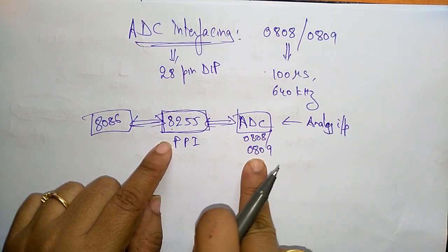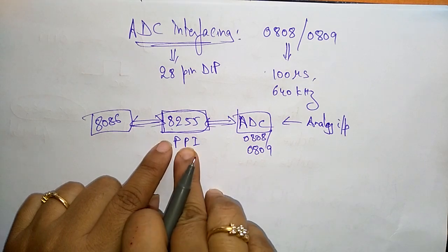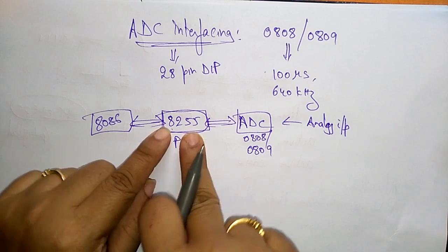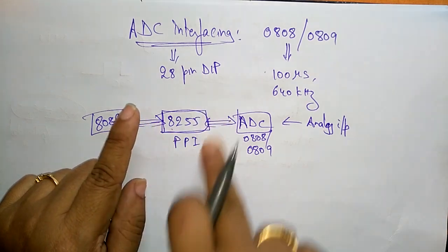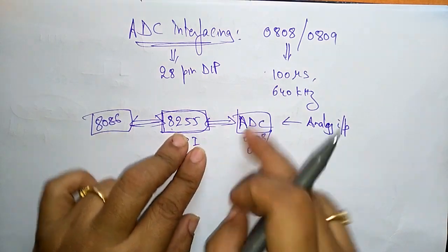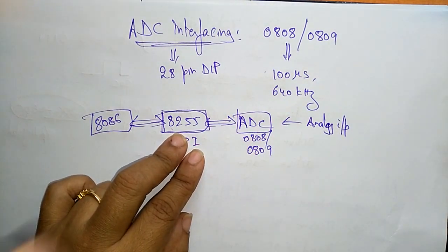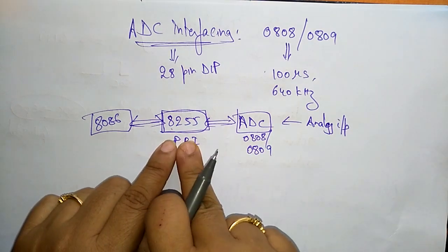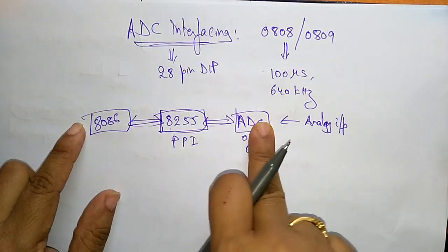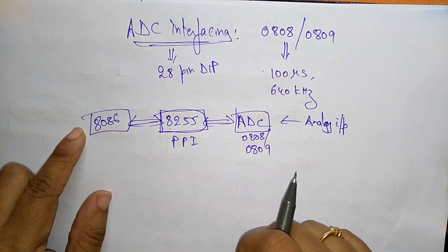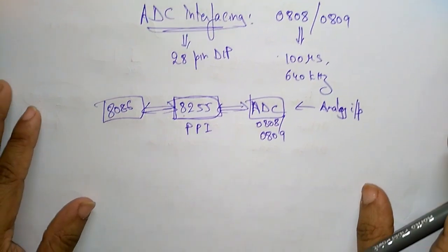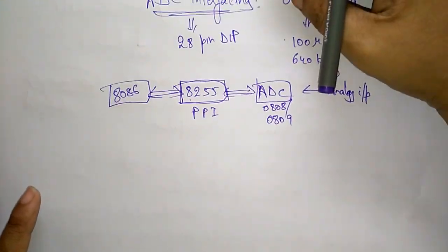Whatever input is given will be converted to digital data, and the digital information will be sent to 8255. The 8255, which is a programmable peripheral interface, acts as an interfacing circuit between the peripheral devices and the 8086. This 8255 sends the data to the 8086 microprocessor, which performs the operation and again sends information to the ADC. This is the conversation between the ADC and the 8086 microprocessor.